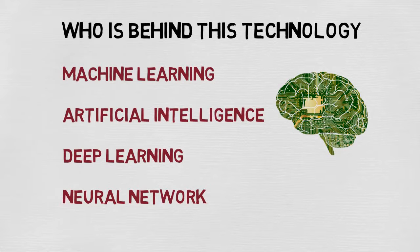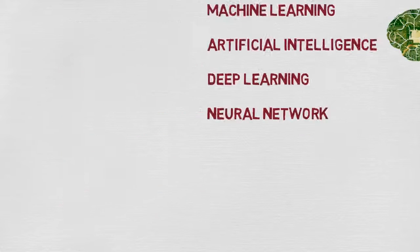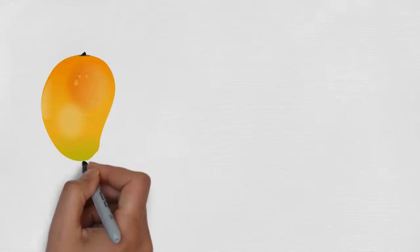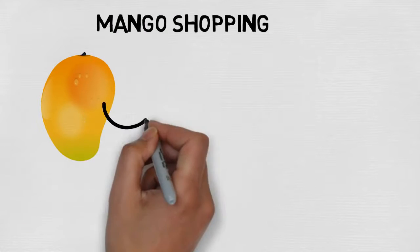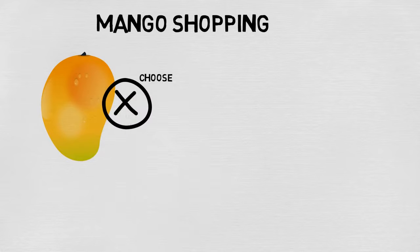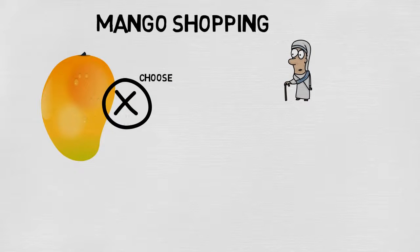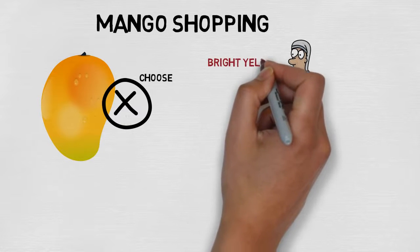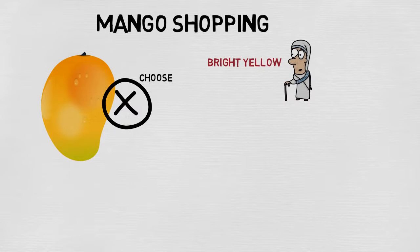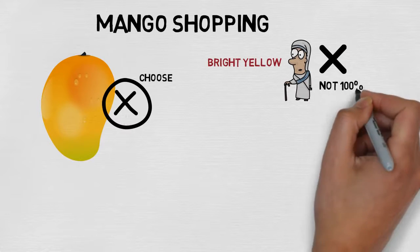So let's try to understand with one example. Let's say you like fruits — a mango. One day you go mango shopping, but you don't know how to choose a mango. Then you remember your grandmother's rule: big, bright yellow mangoes are very sweet. So you buy some mangoes from the market and taste them, but they are not as sweet as you would like. So your grandmother's rule is not 100% correct.